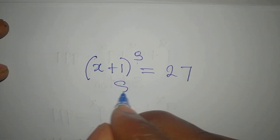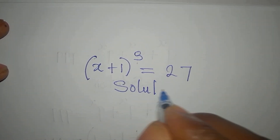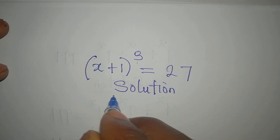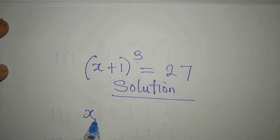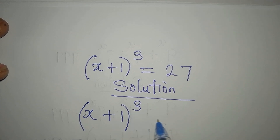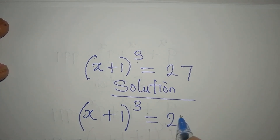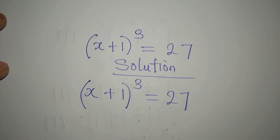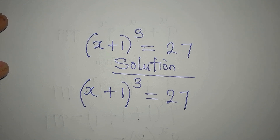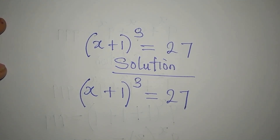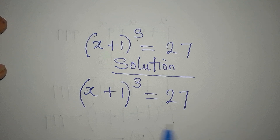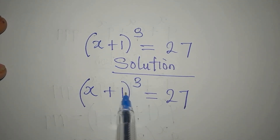Hi everyone, welcome to FUCO Mathematics. Here we have (x + 1)³ = 27. If you are new to this channel, subscribe so you can get more of my videos. We want to provide the complete solution to this equation.